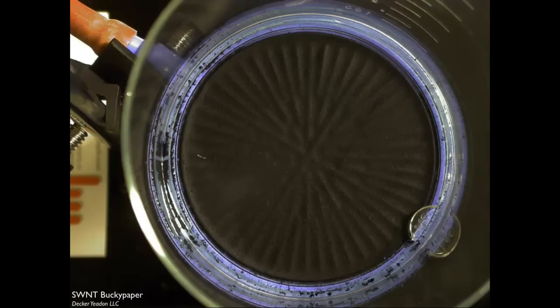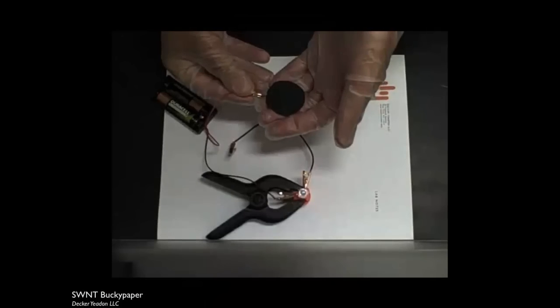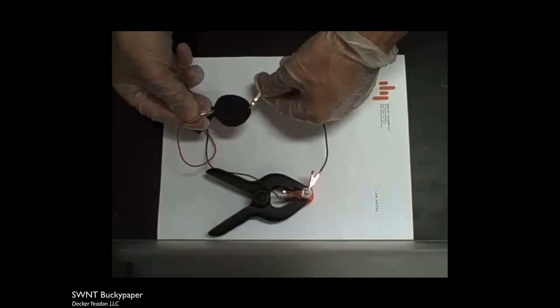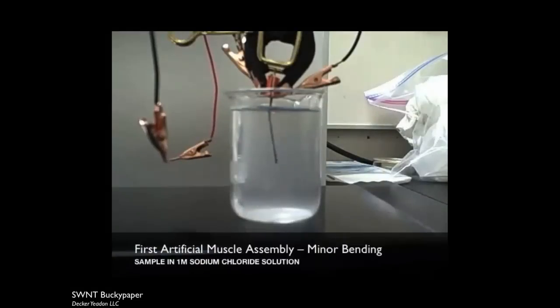What is left over on the top of the filter, the residue, is entirely composed of nanotubes, which are caught on the filter very much like you would catch spaghetti in a strainer. They are only 1.2 nanometers in diameter, but they are several microns long, which enabled us to synthesize this bucket paper. One of the darkest man-made materials ever and extremely flexible, and highly conductive.